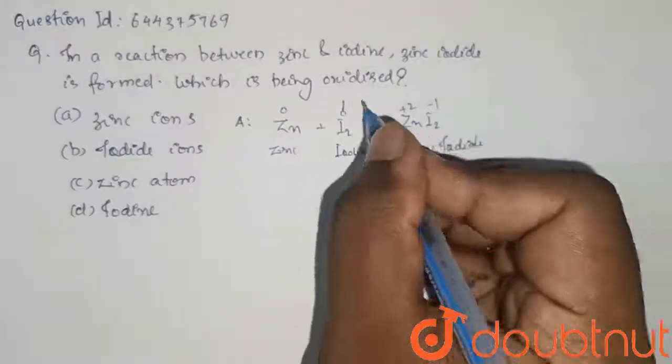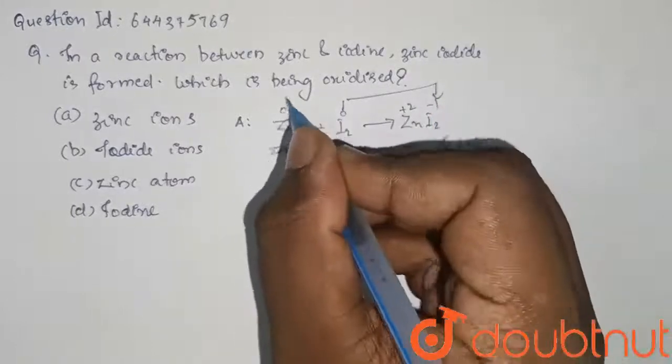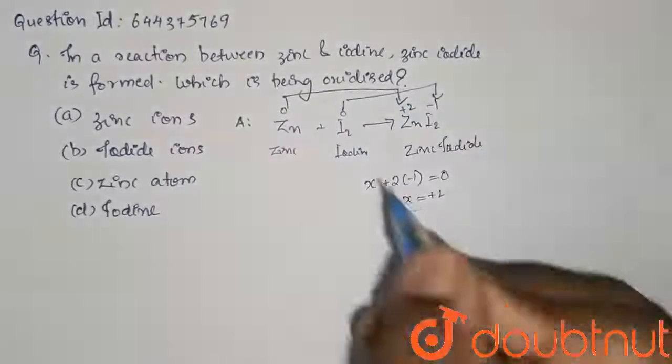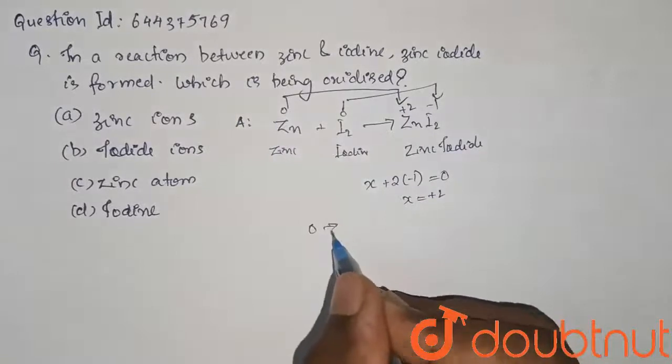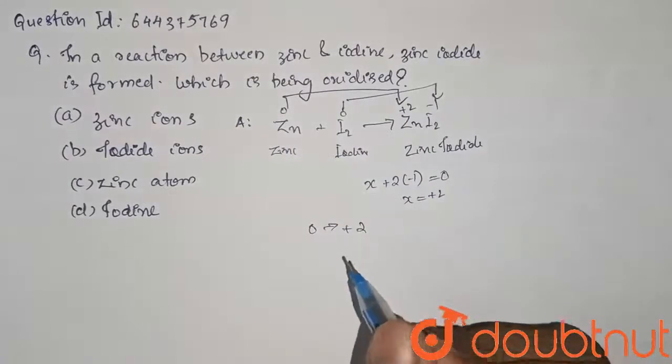So here, iodine is getting reduced. And here, zinc is getting oxidized from 0 to plus 2. So it is the zinc atom.